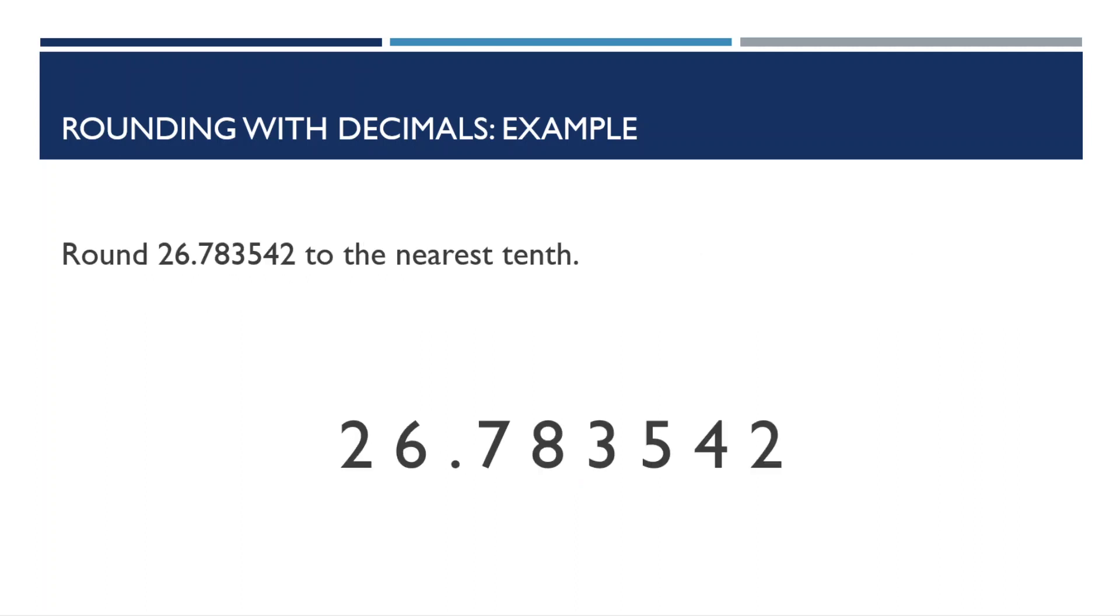Let's do one more example. This one tells us to round 26.783542 to the nearest tenth. So, we find the number in the tenths place, which is the 7. We then look at the number to its right, and see if it's between 0 and 4, or 5 and 9. The number is 8, so that means it's between 5 and 9, and we'll make the number in the tenths position go up by 1. So, we can then change that 7 in the tenths place to an 8, and get rid of all the numbers after it. In the end, we have the rounded off number 26.8.